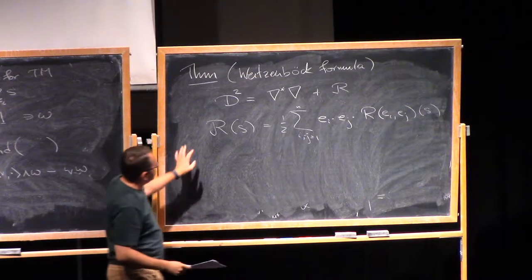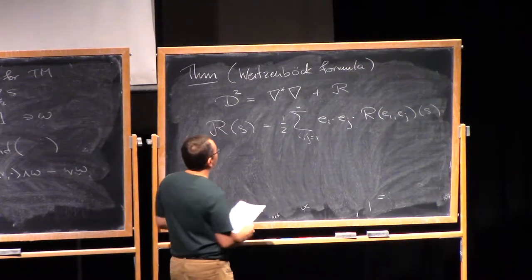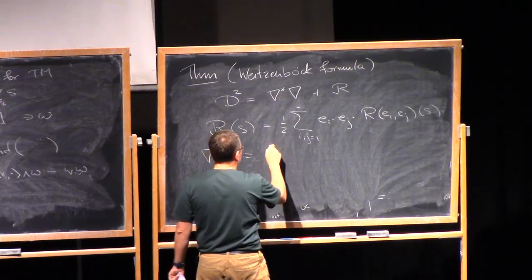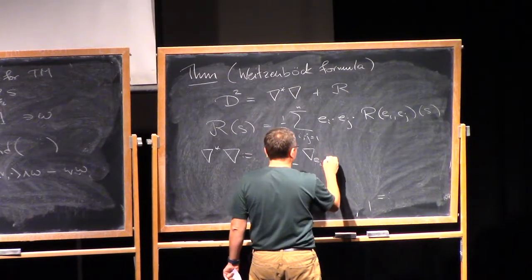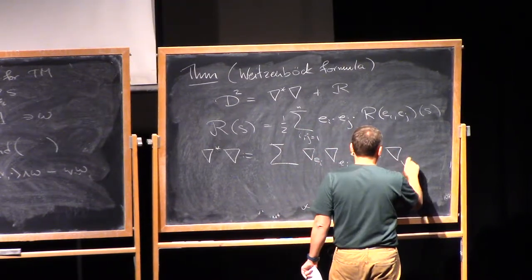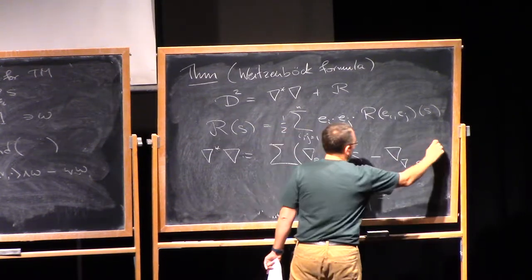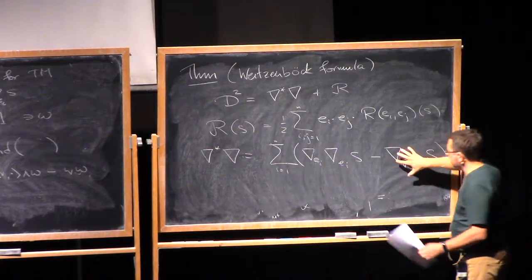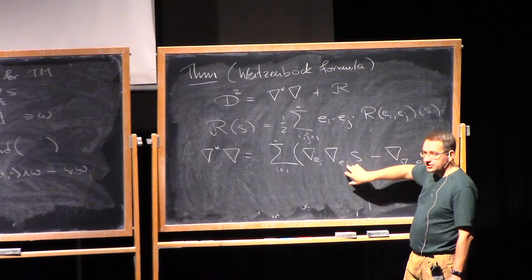Now, the formula itself maybe is not very important. What is important is that R is a zero-order operator. This is an algebraic thing. And what is this one? So Nabla star Nabla is just sum Nabla EI, Nabla EI applied to S, when I is from 1 to N. In other words, so if you ignore this term, so this is the first order, the main term is this one, the second order, where you clearly see this is just a Laplacian here.